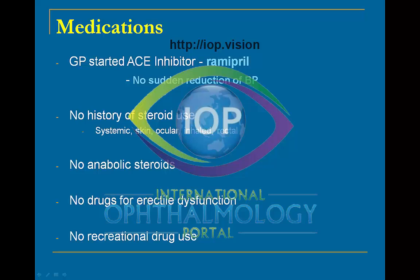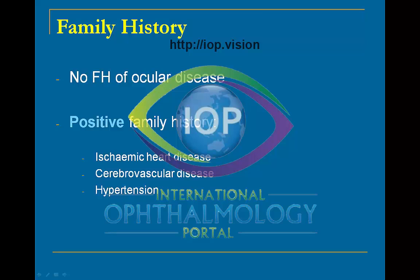The gentleman denied anabolic steroid use, denied the use of any drugs for erectile dysfunction, and denied recreational drug use. There was no family history of any ocular problems; however, he did have a positive family history for relatively early-onset ischemic heart disease, cerebrovascular disease, and hypertension in male family members.